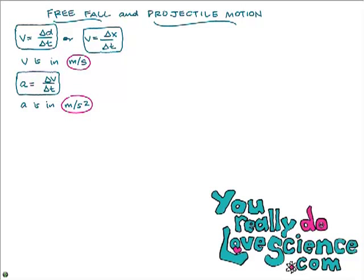Remember that acceleration is a rate of a rate. Velocity is a rate — how fast something's going. Acceleration is all about how quickly the velocity is changing, so that's why it's a rate of a rate. It's how much the velocity changes every second, which you get by dividing the change in velocity over the change in time to get meters per second squared.